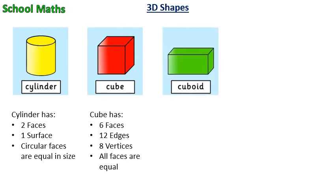This shape is cuboid. It has 6 faces, 12 edges, 8 vertices, and the opposite faces are equal in cuboid.